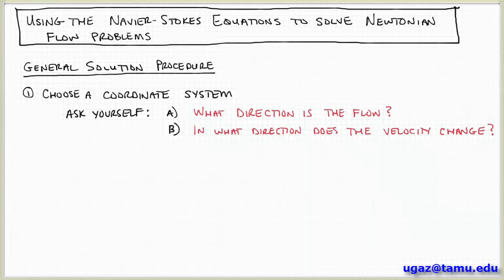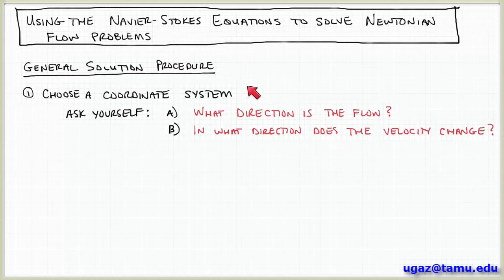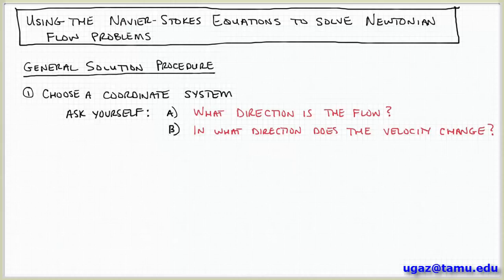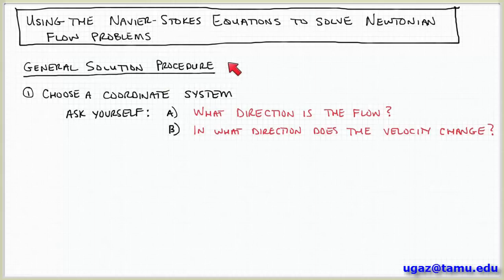There are classes of problems where we're able to obtain useful solutions, and that's what I'm going to talk about here, starting with one example involving pipe flow. The procedure we're going to apply can be applied to any problem involving the Navier-Stokes equations. Following it, you'll be able to reduce the Navier-Stokes equations down to a simpler system of differential equations solvable with the appropriate boundary or initial conditions — after that, it becomes a differential equations problem.